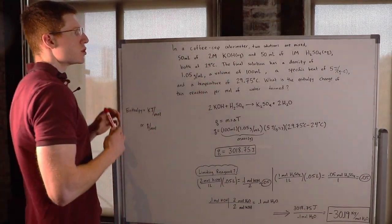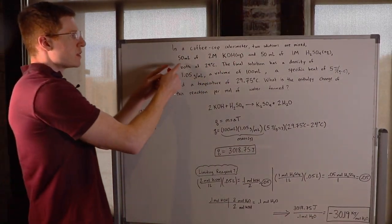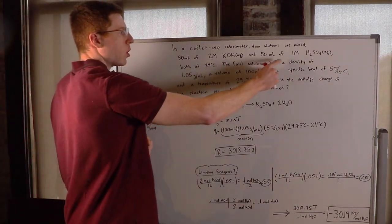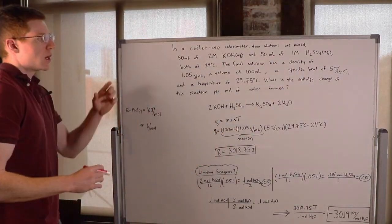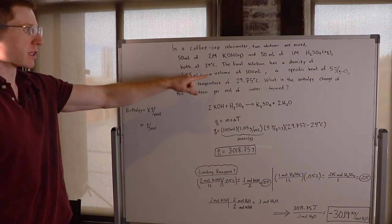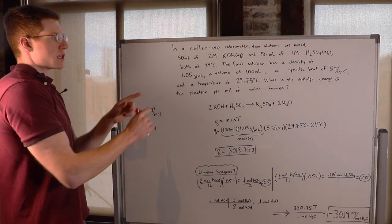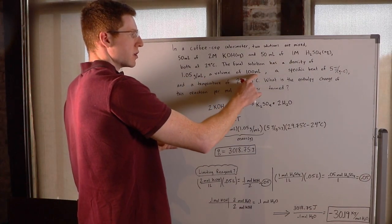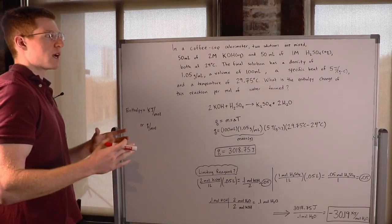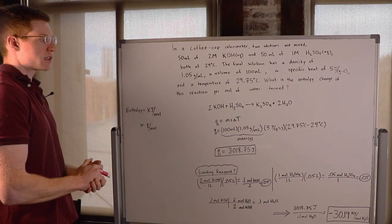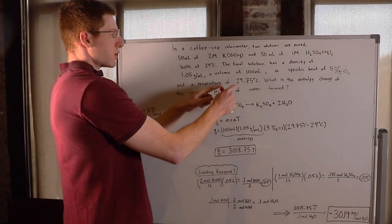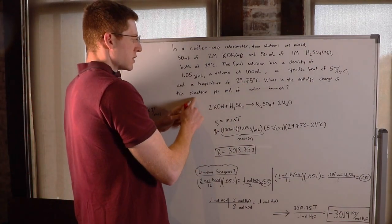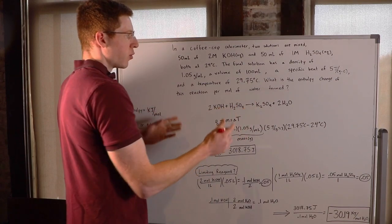In a coffee cup calorimeter, two solutions are mixed: 50 milliliters of 2 molar KOH and 50 milliliters of 1 molar H2SO4, both at 24 degrees Celsius. The final solution has a density of 1.05 grams per milliliter, a volume of 100 milliliters, a specific heat of 5 joules per grams times degrees Celsius, and a temperature of 29.75 degrees Celsius. What is the enthalpy change of this reaction per mole of water formed?